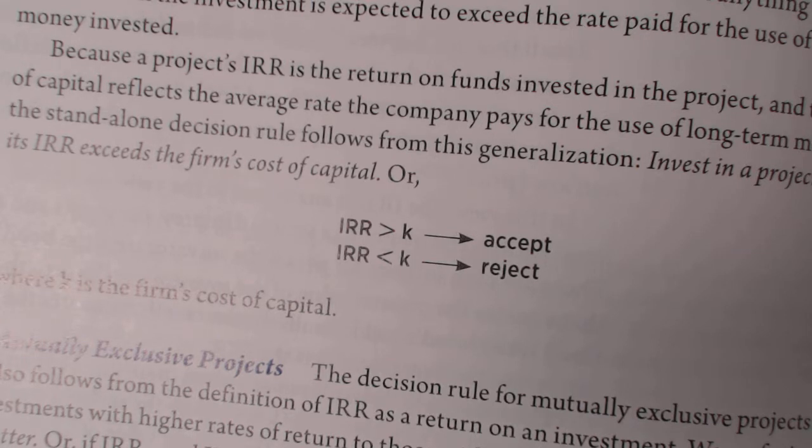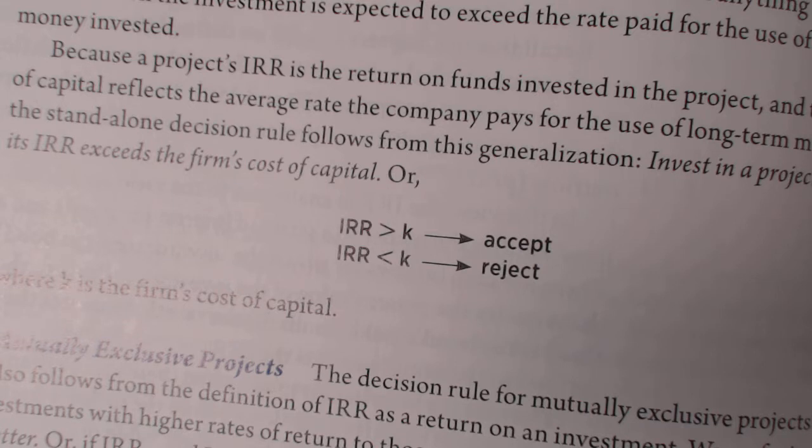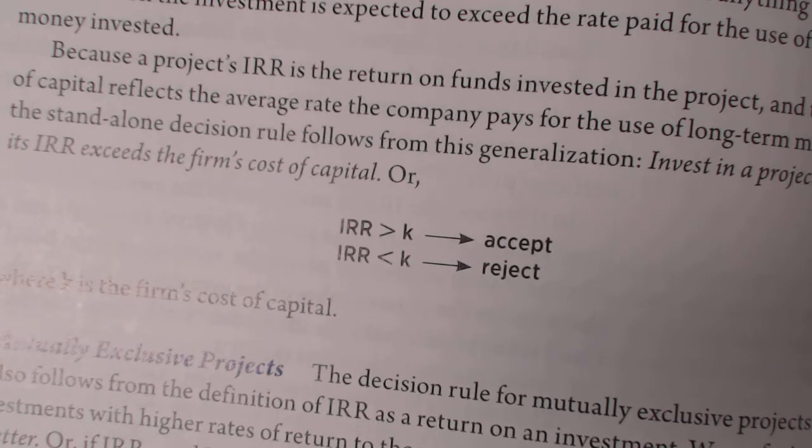So what we're looking to do is we're trying to get our IRR to be 0. And when we can figure out what the IRR is at 0, that will then tell us what our interest rate is. So at the 0 point, if we are getting, say for instance,